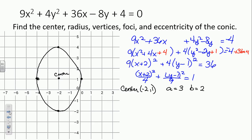We try to draw something that resembles an ellipse. Our major axis is 6 long, our minor axis is 4. The foci are always on the major axis. The vertices are negative 2, negative 2 and negative 2, positive 4.